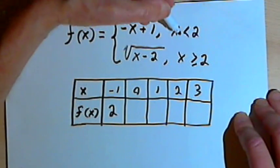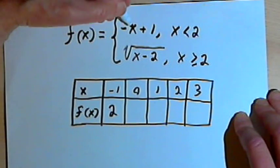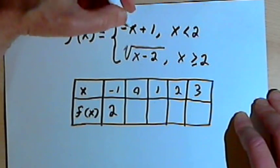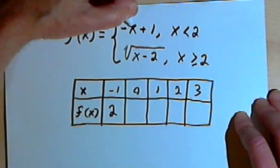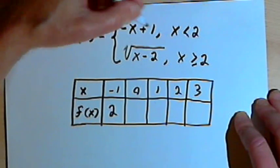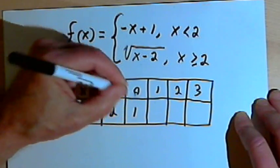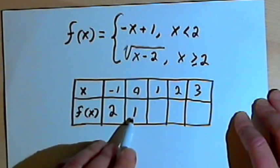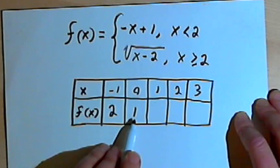When x is 0, since 0 is also less than 2, I'll still use these first instructions. I'll plug a 0 in instead of the x, I'll have negative 0, which is just 0, plus 1. So when x is 0, f or y is going to equal 1.